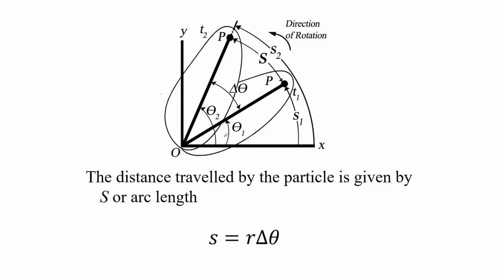The motion of this point travels a distance s1 at time t1 at a position theta 1. As it progresses to a later position theta 2 at time t2, the total distance traversed by this point is equal to its arc, which equals radius times the change in theta.